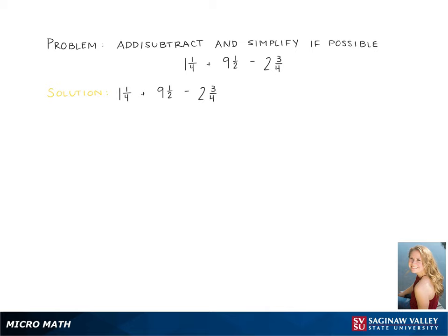So our first step with this problem is changing these mixed numbers into improper fractions. So 1 and 1 fourth becomes 5 fourths, 9 and 1 half becomes 19 halves, and 2 and 3 fourths becomes 11 fourths.